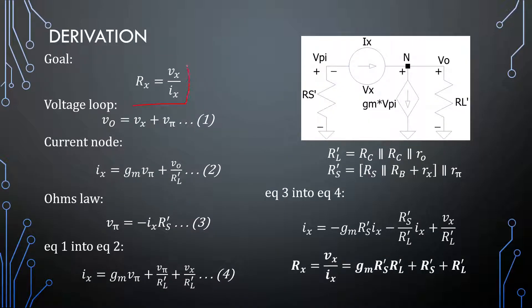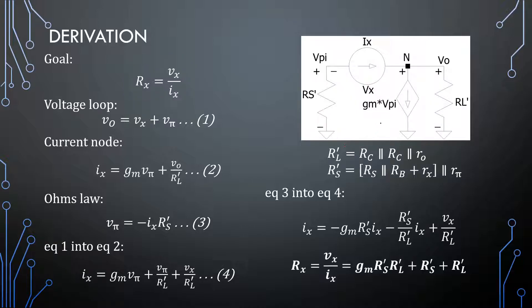Our goal is to find Vx over Ix. First, we can see voltage drops across the circuit with consistent polarities, and V_out is equal to Vx plus V_pi. Second, looking at this with Kirchhoff's current law at the output node: Ix flows into it, Gm*V_pi flows out of it, and there is a current flowing through the load resistor equal to V_out over R_load_prime. So Ix equals Gm*V_pi plus V_out over R_load_prime.